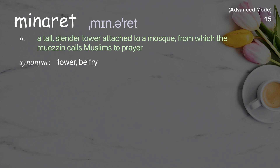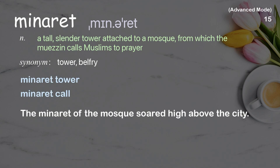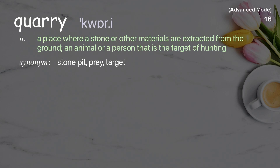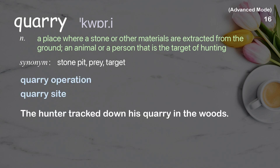Minaret: A tall, slender tower attached to a mosque, from which the muezzin calls Muslims to prayer. Examples: Minaret tower, minaret call. Quarry: A place where stone or other materials are extracted from the ground; also an animal or person that is the target of hunting. The hunter tracked down his quarry in the woods.